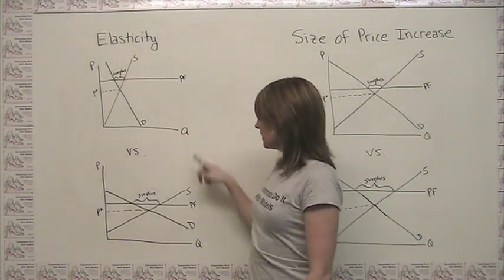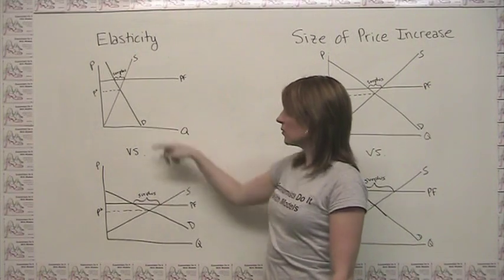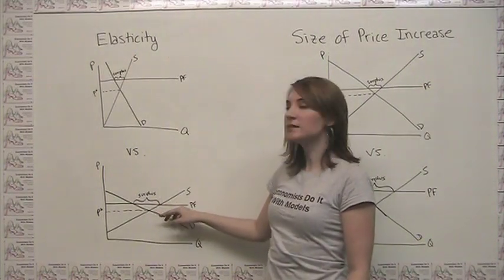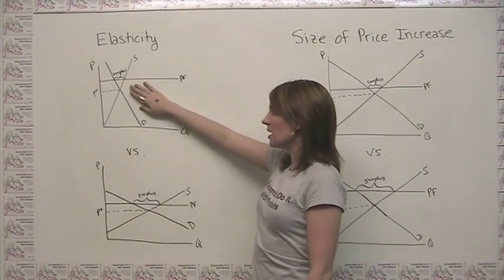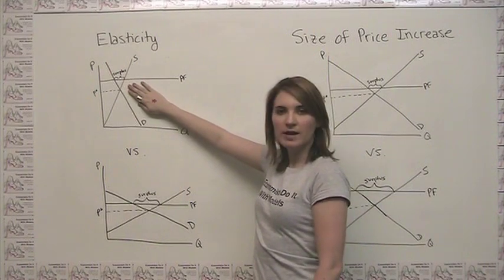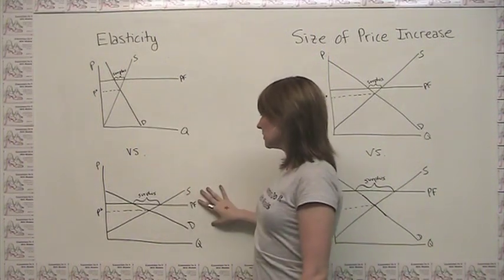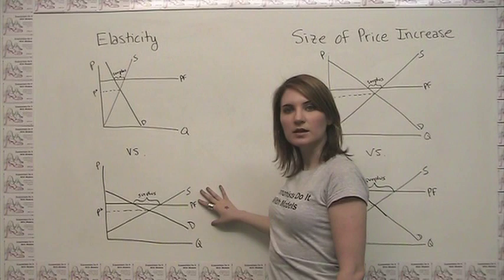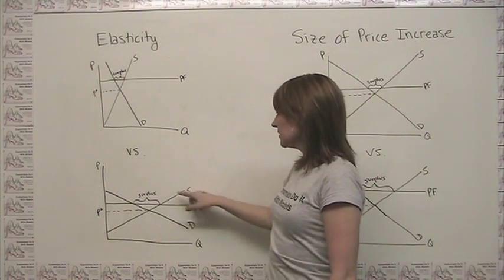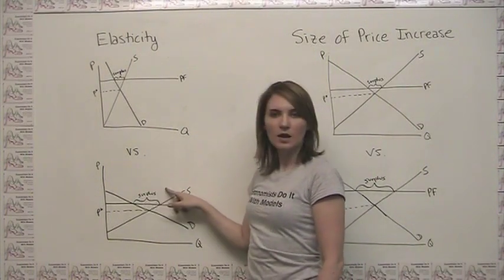Here, we've drawn two price floors that are the same amount away from the original equilibrium price. The only difference is that we have lower elasticity of supply and demand here, and higher elasticity of supply and demand here. And that higher elasticity leads to a bigger surplus.